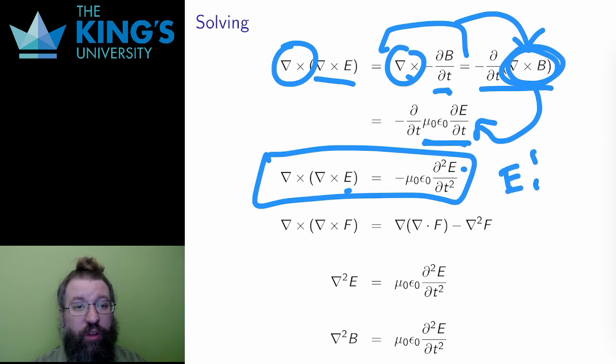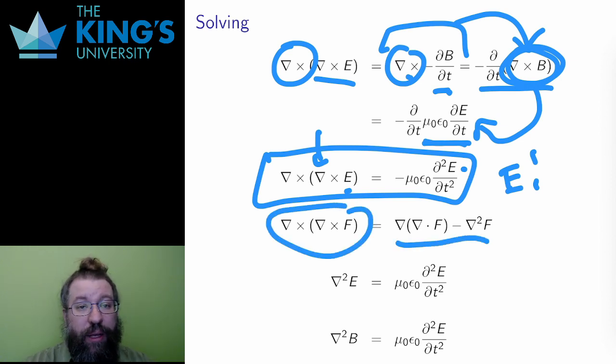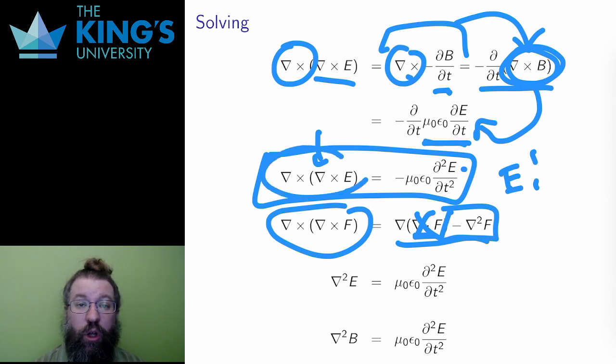Now I want to adjust this equation into something I can actually solve. There is an identity for doing the curl twice, which I haven't covered, but I'm going to use it here anyway. The divergence terms are all zero by Maxwell's first equations. Divergence is created by charged particles, and there are no charged particles here, so the divergence is zero. Therefore, all that is left is Nabla squared, which is the Laplacian of each component of the field. I can replace the double curl with the Laplacian and get rid of the negative on both sides to get this equation.